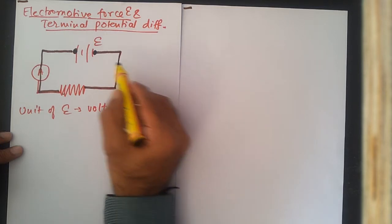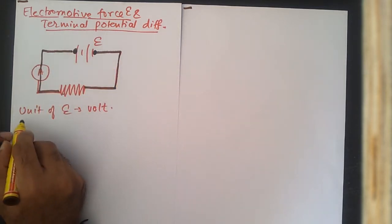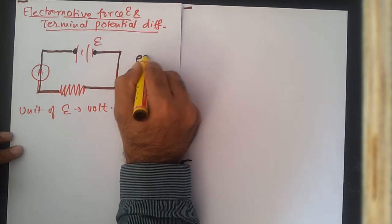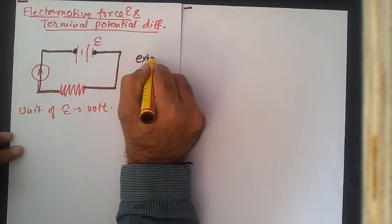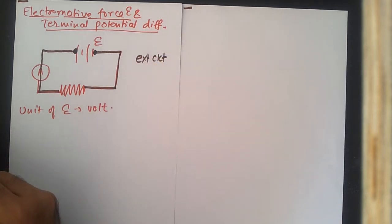This particular part is known as the external circuit, and the other part, the remaining part, is the part within the cell. The current continues to flow into the cell and complete this. This particular part shown in green is the internal circuit.